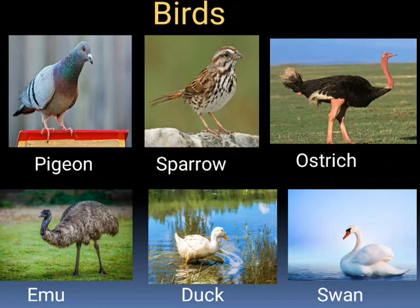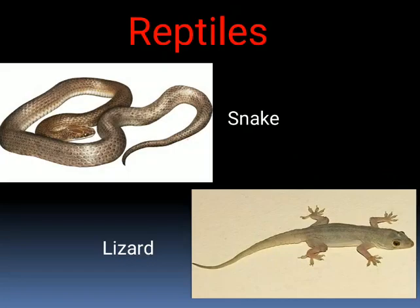Some birds such as emu, penguin and ostrich cannot fly. They can only walk or run. Some birds such as duck and swan can swim in water. Peacock is our national bird of India.